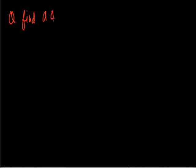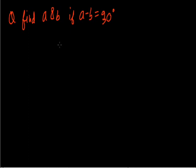Today we solve problems about angles. The first question is: find A and B if it is given that A minus B equals 30 degrees. We have to find the values of A and B if A minus B is 30 degrees in the given figure.